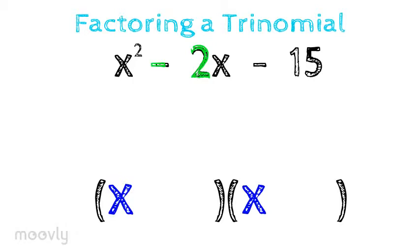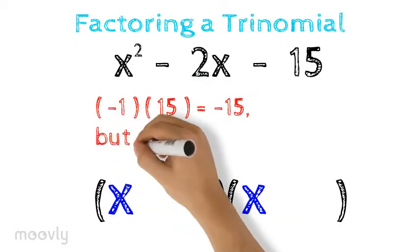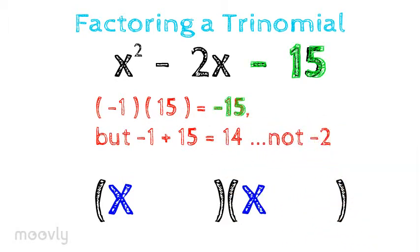Notice negative 2 is the middle term. Negative 1 and 15 don't work. Even though they are factors of negative 15, negative 1 plus 15 is 14, and we need that sum to be negative 2.